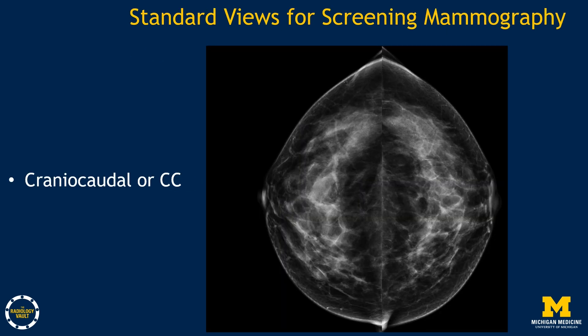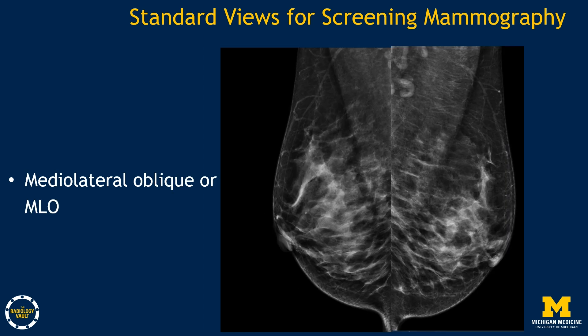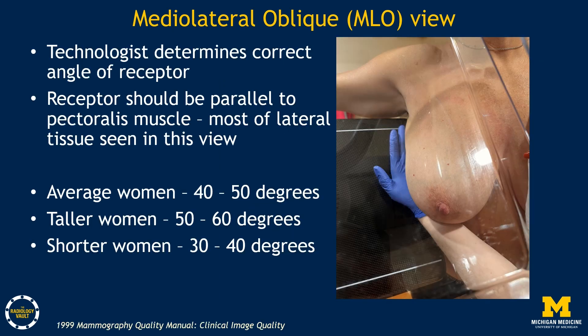The standard views for screening mammography are the craniocaudal or CC view and the medial lateral oblique or MLO view. Most technologists will start with the MLO view, and the technologist must first determine the correct angle of the receptor. Most of the lateral tissue on a mammogram will be seen in this view, so the receptor should be parallel to the pectoralis muscle. For the average woman, the angle of the receptor will be between 40 and 50 degrees, usually about 45 degrees.